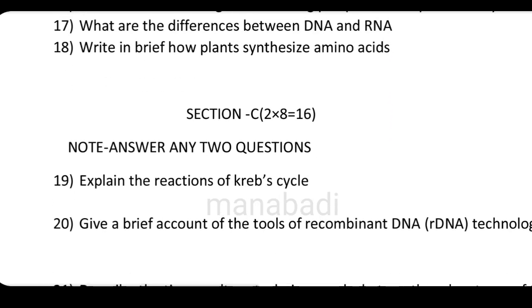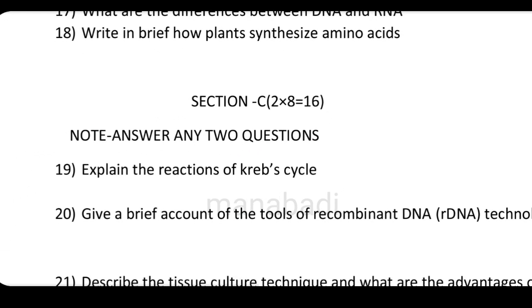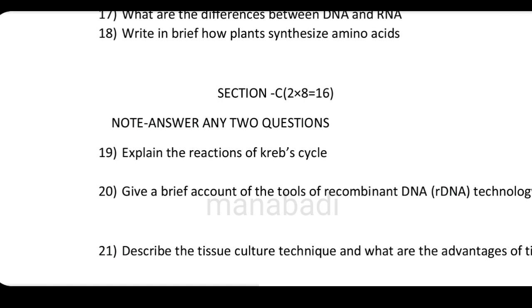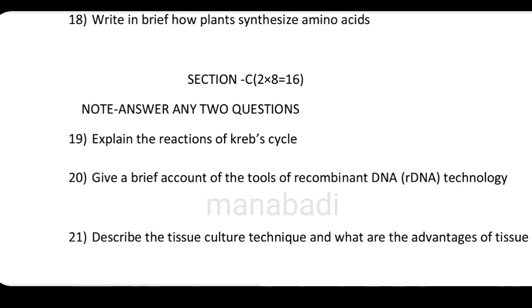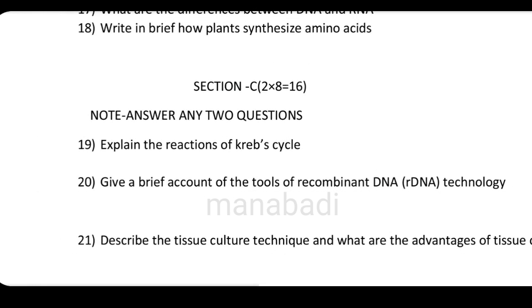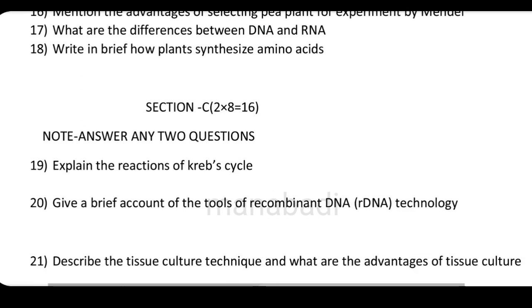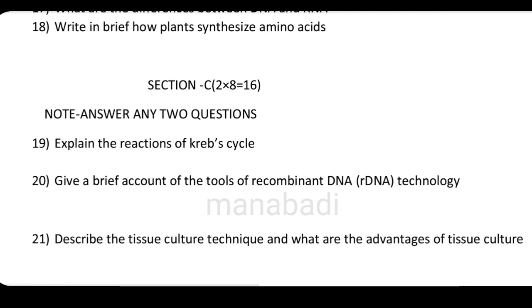If you have a favorite topic, focus on it. You have marks on the diagram, so you have reactions — easy and easy marks on the diagram. Give a brief account of the tools of recombinant DNA technology. If you have 4 marks on the DNA, you can do it. Describe the tissue culture techniques and what are the advantages of tissue culture.